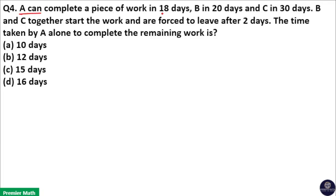A can complete a piece of work in 18 days, B in 20 days, C in 30 days. B and C together start the work and are forced to leave after 2 days. The time taken by A alone to complete the remaining work is?